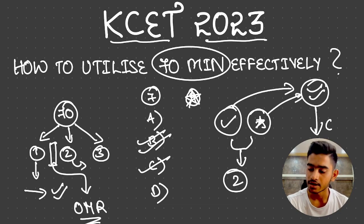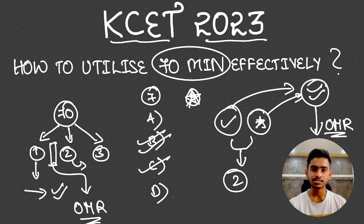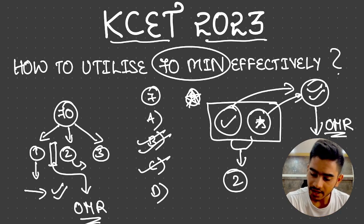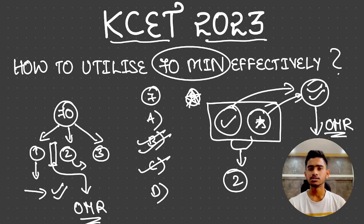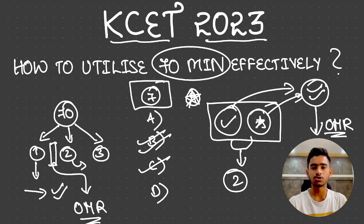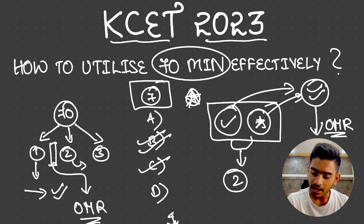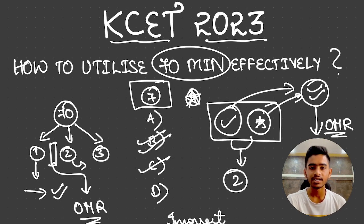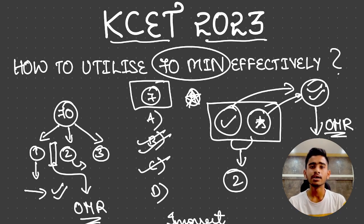Then comes Slot 3, the final slot. Certain questions will still be remaining from Slot 2, and there will also be questions you were blank on in Slot 1. Take these questions and go through each one carefully — read the question two or three times, because examiners often play with 'incorrect' and 'correct' wording. Even I became a victim of that. In Slot 3, try to eliminate options and arrive at the best possible answer.